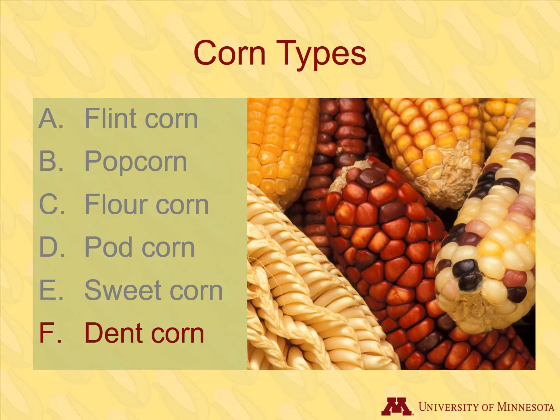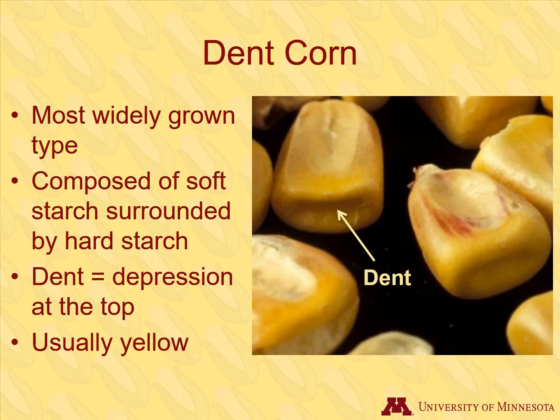We will now discuss the most economically important type of corn: dent. Dent corn is the most widely grown type of corn. It is composed of mostly soft starch surrounded by hard starch. Unlike other corn types, there is a depression or dent at the top of the kernel, which is formed when it dries and the soft starch shrivels. Dent corn is usually yellow. However, there also are white dent corns, which don't have beta-carotene and are used for corn flakes, tortilla flour, and cornmeal.